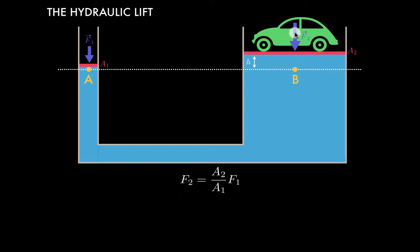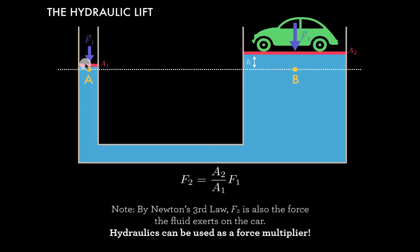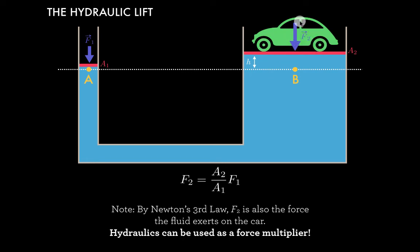For conceptual exploration, it's worth considering the situation where the weight of the fluid is small. Neglecting that term, we have that F2 is equal to A2 over A1 times F1. By Newton's third law, F2 is also the magnitude of the force that the fluid exerts on the car. So by pushing down with a small force F1, we can exert a much larger force on the car if A2 is much bigger than A1. This is hydraulics acting as a force multiplier — put in 10 Newtons, and if the area is 10 times larger, we get 100 Newtons on the car.